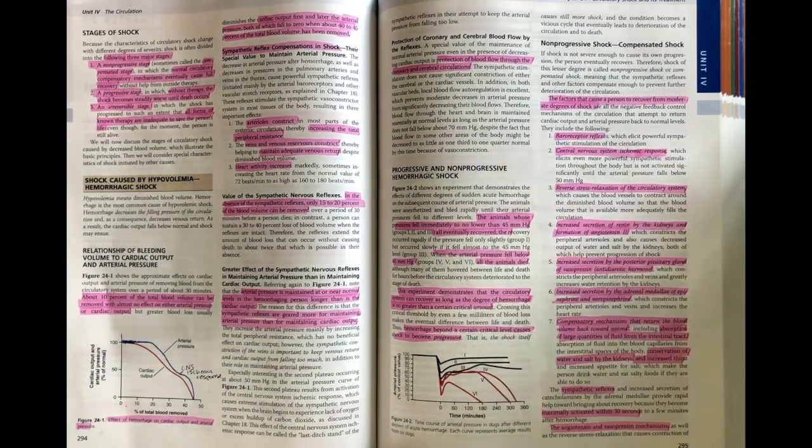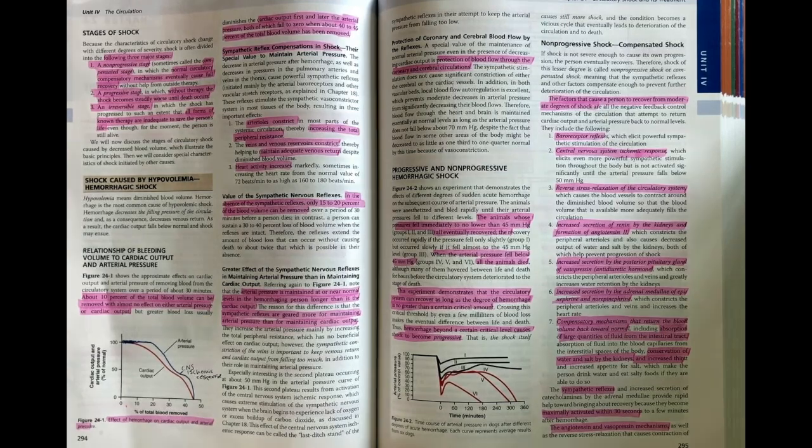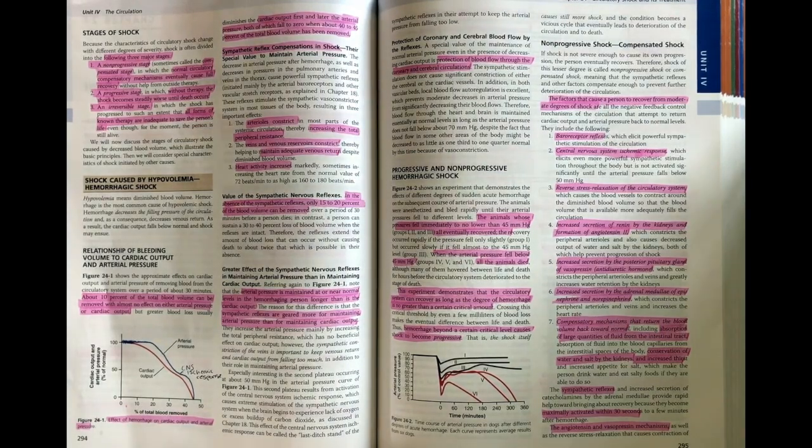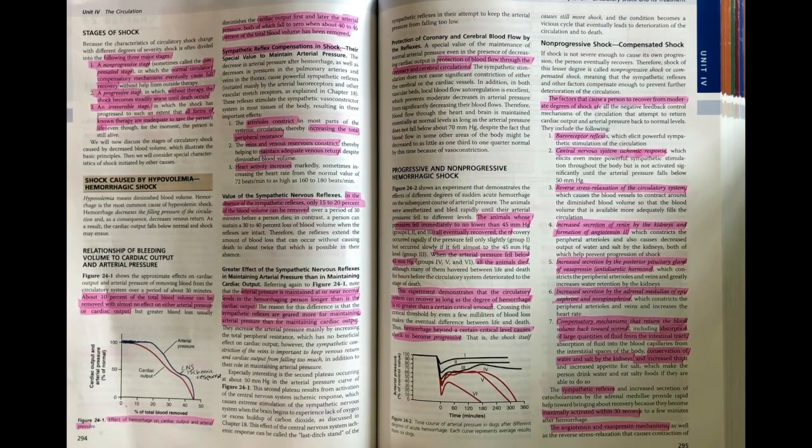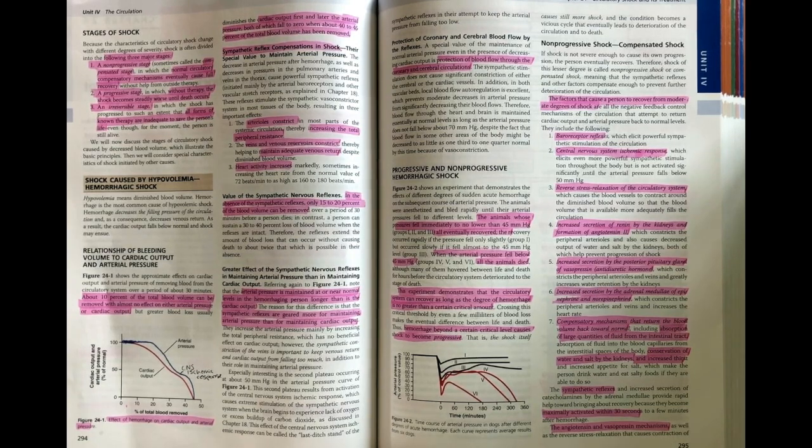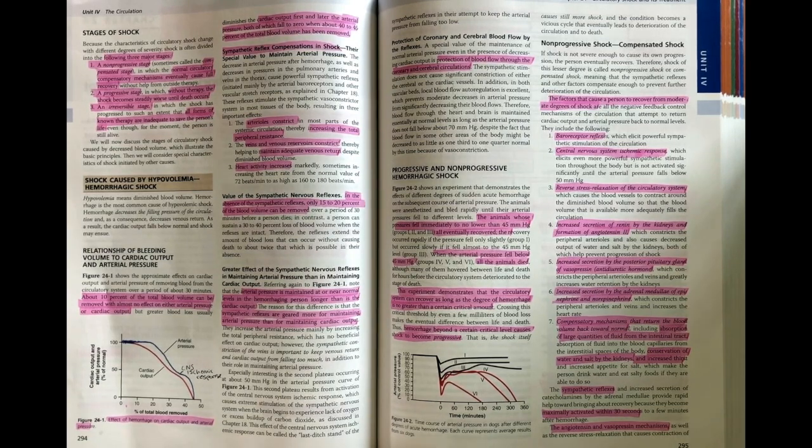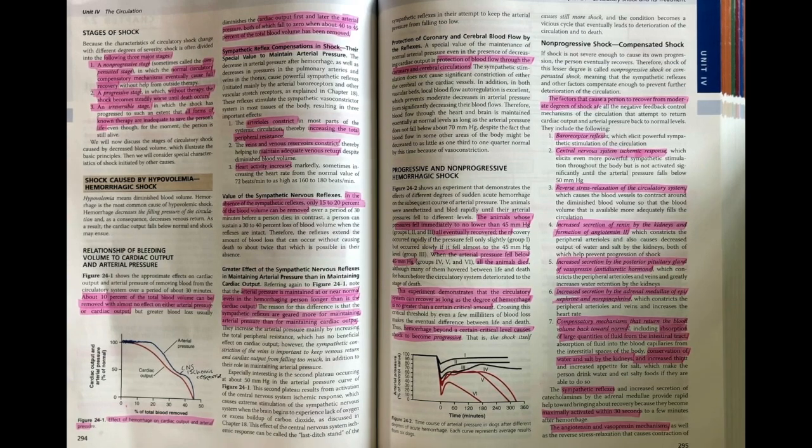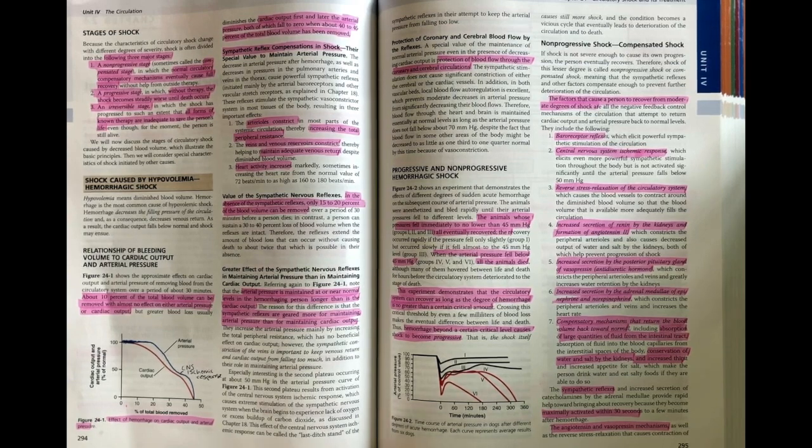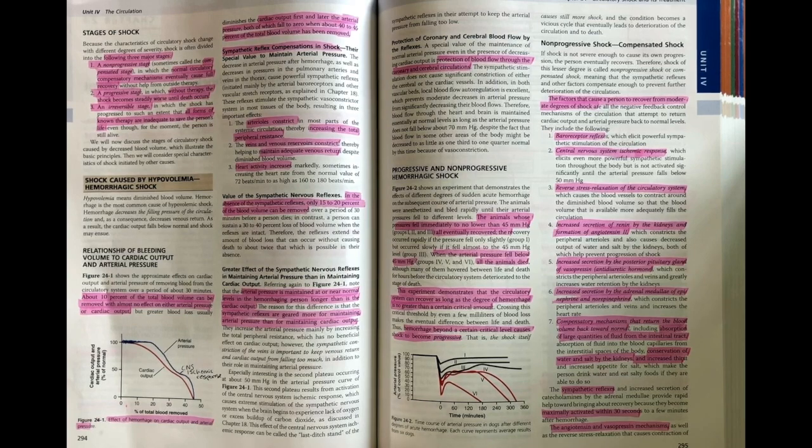If we talk about compensated shock, we can go through each of the factors that actually contribute to maintaining normal cardiac output so that we are able to recover from, say, a minor bleed. We've touched on all of these factors before in the previous chapters, so we'll just list them off here.